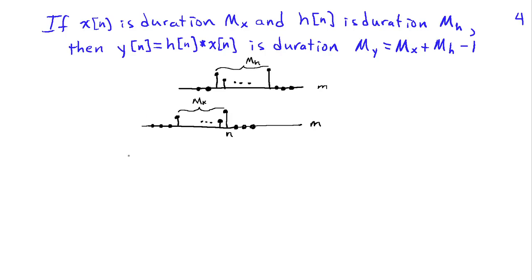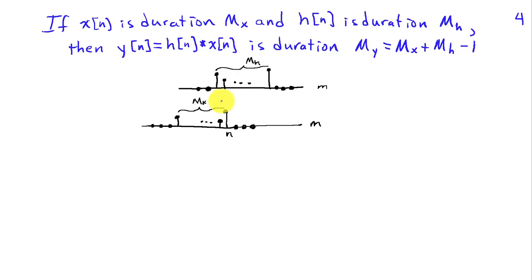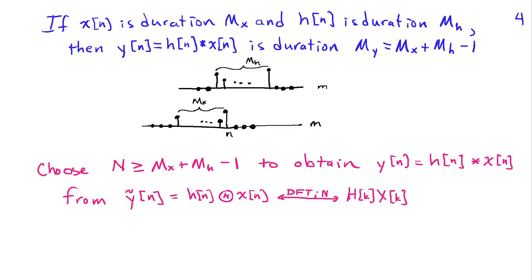Suppose x of n has duration M_x and h has duration M_h. Then the ordinary convolution y has duration M_y equal to M_x plus M_h minus 1. You can verify this graphically by fixing h and flipping and shifting x past it — the non-zero parts overlap for a duration equal to the sum of the two individual durations minus 1. So if I choose the DFT length N to exceed M_x plus M_h minus 1, then I can recover y of n from the circular convolution y-tilde of n.